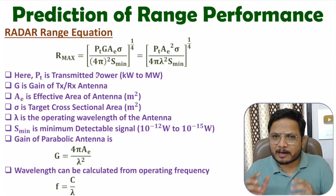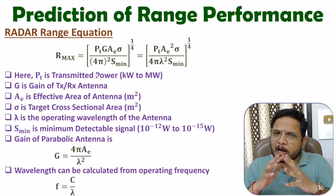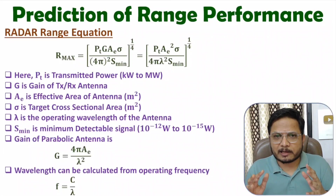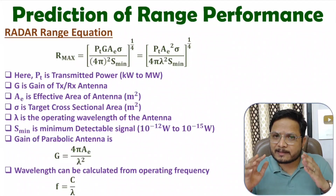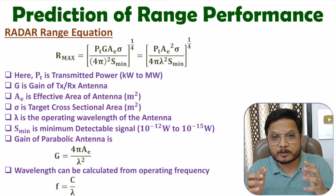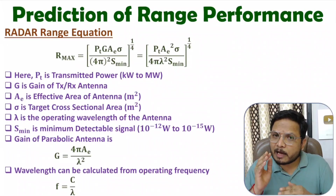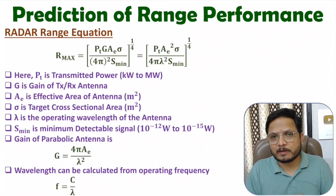With a radar system, we transmit a high power signal. That signal is in the range of a few kilovolts to megavolts. So we transmit this high power signal with the use of an antenna.